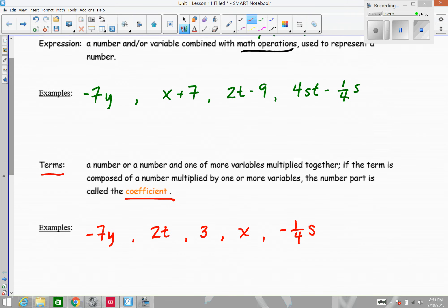If I go back up and look at our expressions, this negative 7y, that's one term. x plus 7 consists of two terms, an x term and a 7. So this is two terms, and each term is separated by the addition sign. In this next example, there are also two terms. The 2t is a term and the 9 is a term. And in this case, they are separated by a subtraction sign. In this last example, there are also two terms. And again, they're separated by, in this case, a minus sign or subtraction. So we want to keep in mind that our terms are always separated by pluses and minuses, or additions and subtractions.